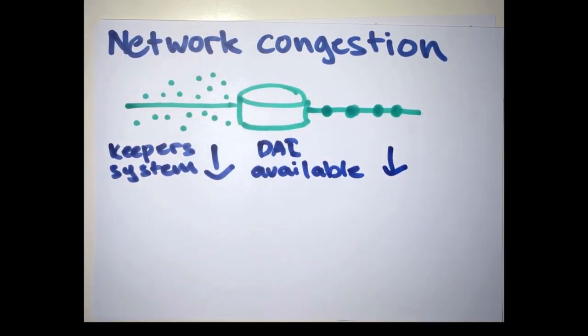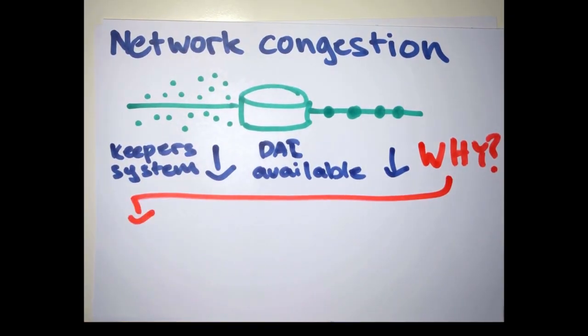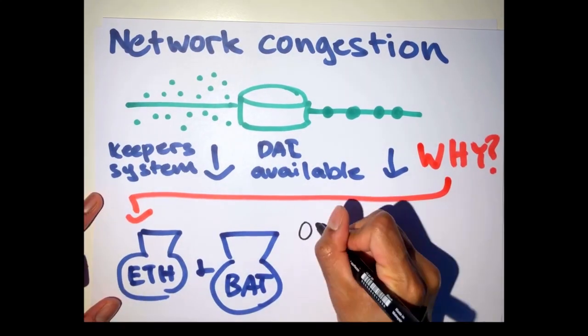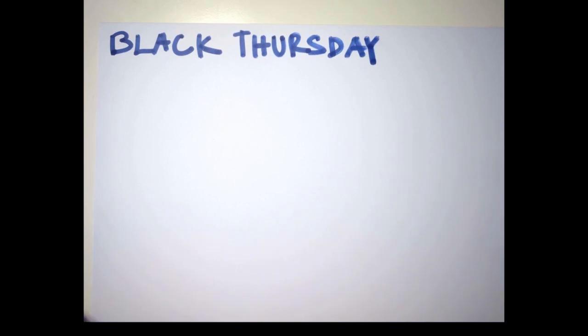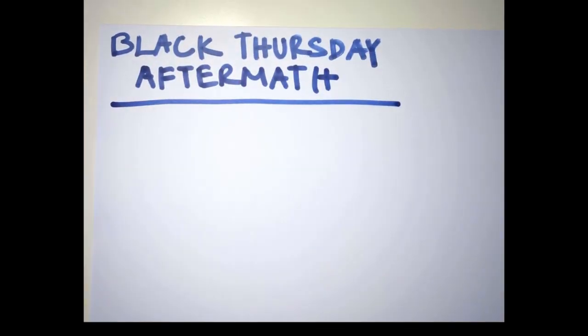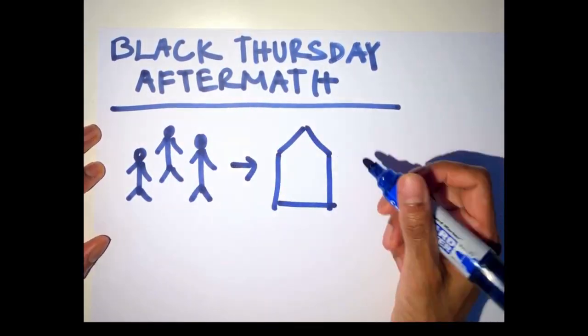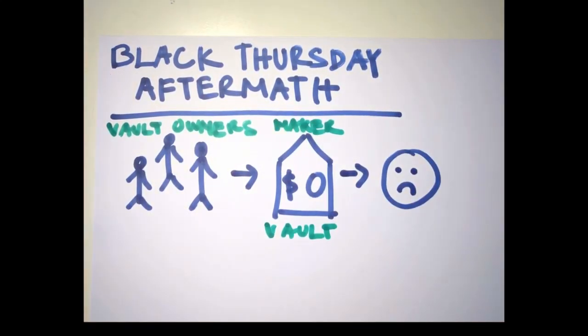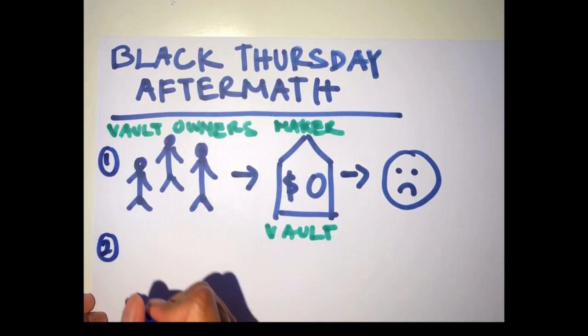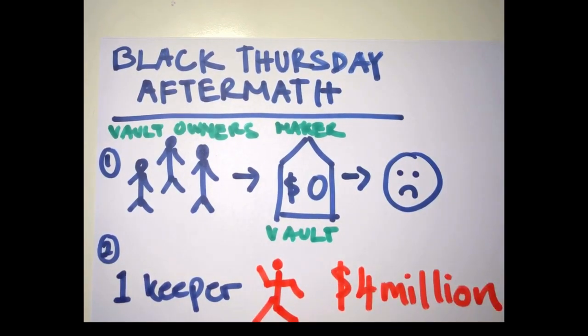Also, as MakerDAO only had crypto assets as options for collateral at that time, keepers could not get hold of DAI that they needed to bid on vault auctions. Because of this, dozens of MakerDAO vaults were emptied as one keeper figured that he could bid ETH at zero value and win auctions of vaults to be liquidated. This one keeper walked away with $4 million on Black Thursday.